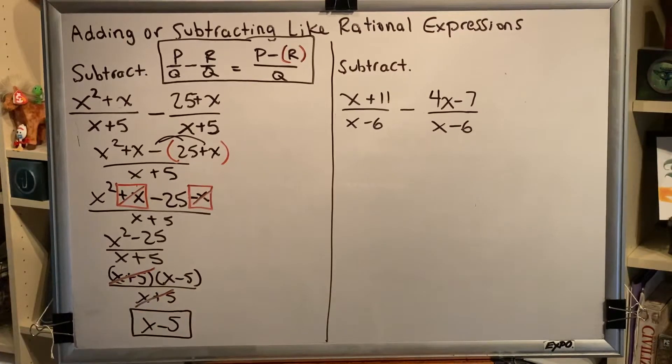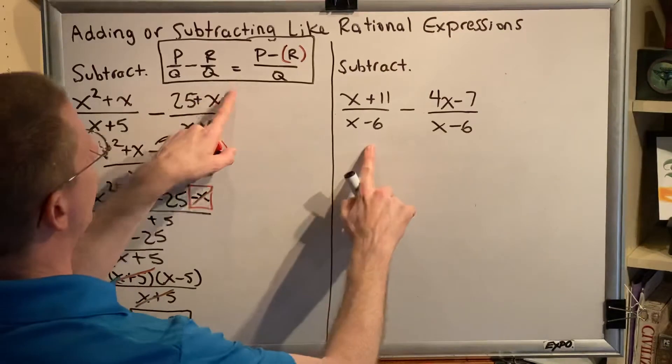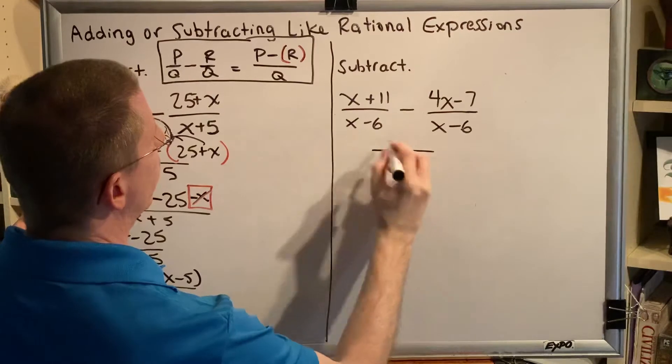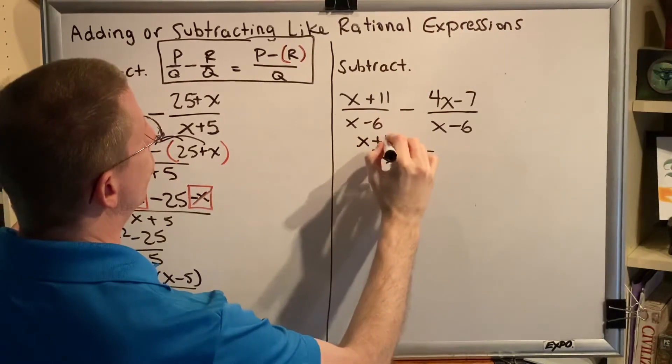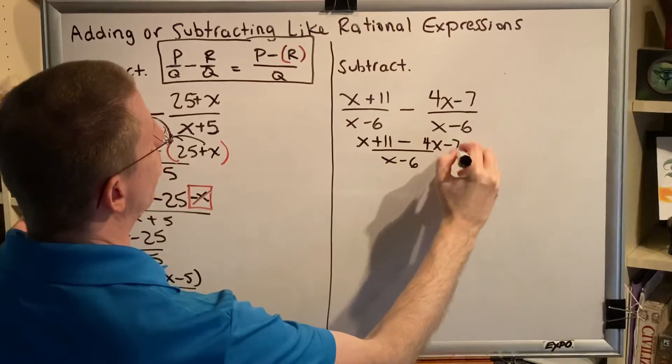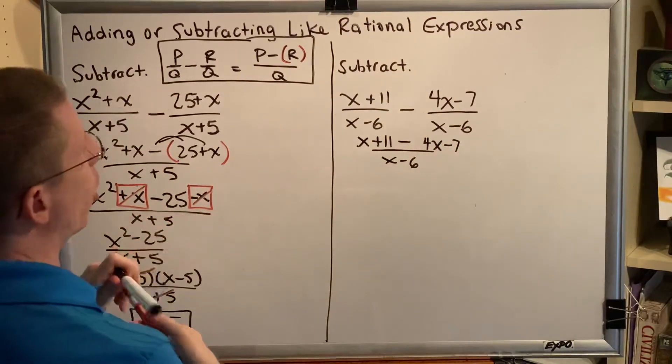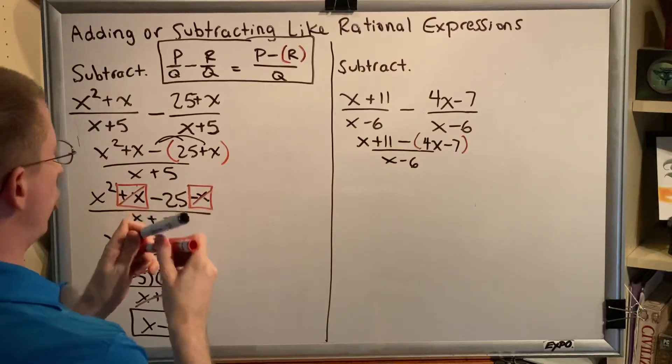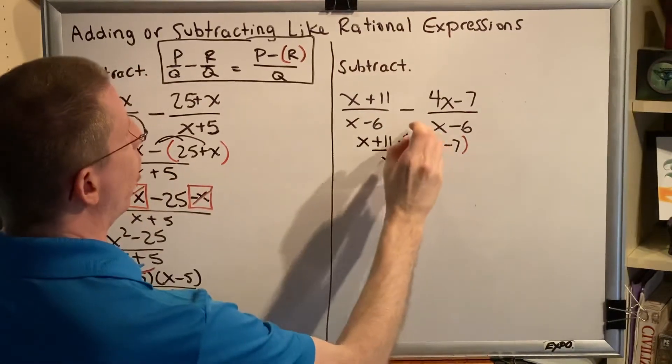Let's now complete this second problem. Same structure, so same approach. Keep the common denominator, subtract the two numerators, and once again, because our second numerator is more than one term, we have to put the whole thing in parentheses and distribute the subtraction to all terms.